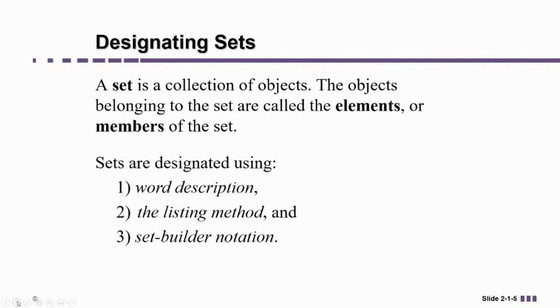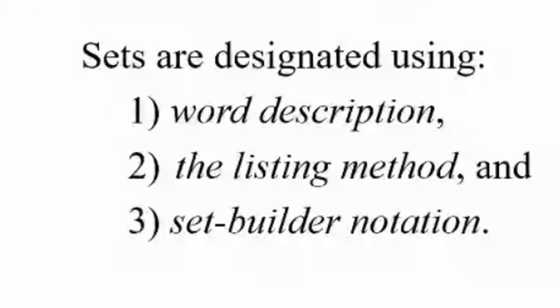When we define a set, we need to do so very precisely, and we can do this in a few different ways. We can use a word description. We can list all the elements of the set out. For example, the set of all students in this class, I could list out all the names. That would be a listing method. Or we can use something called set-builder notation. And one of the things you're going to need to be able to do is to go back and forth between these different ways of defining a set.